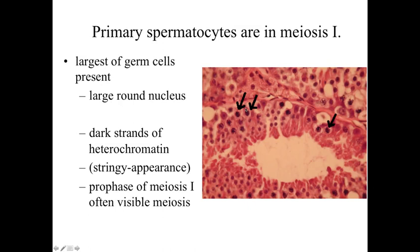Once they complete meiosis I, these primary spermatocytes are going to become secondary spermatocytes. The secondary spermatocytes are going to be in meiosis II. For the purposes of this course using light microscopy, you're really not going to be able to identify cells as secondary spermatocytes, because these cells go through meiosis II very, very rapidly and are not going to be around long. So the majority of the cells we see are going to be primary spermatocytes, and we're not really going to worry about the secondary spermatocytes.